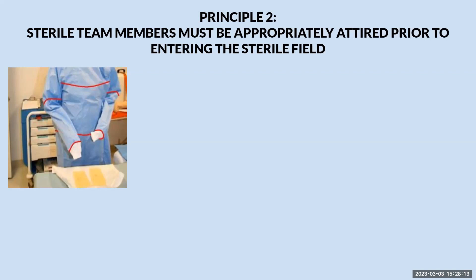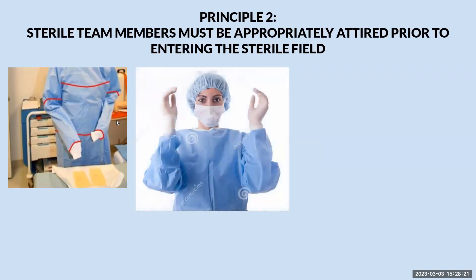The back table should be at your side or at an angle so that you don't hit it behind you. Hands should not be allowed to fall below table level. Team members should avoid raising the hands above the mid-chest line. As you can see in this picture, her hands are too high — that area is all unsterile, so she's taking the chance of bumping. Her hands should rest in that sterile area.